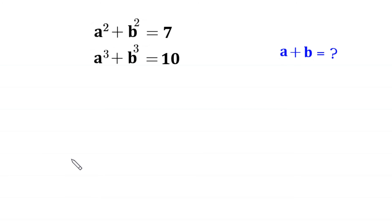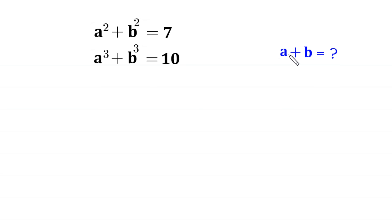Hello everyone, you are welcome to how to solve this very nice system of equations. a squared plus b squared is equal to 7, and a cubed plus b cubed is equal to 10. Our job is to find all possible values of a plus b.